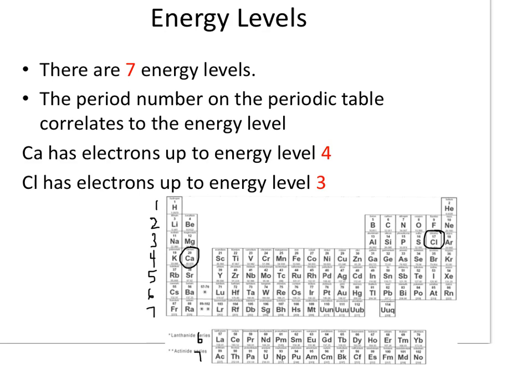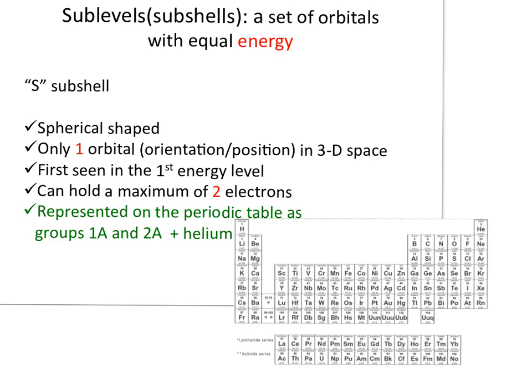The first subshell is the S sub-level. It contains only one orbital and can hold a maximum of two electrons. Using the periodic table, we box in the Group 1A and 2A elements — those correlate to the S sub-shell. Helium is also part of that S sub-shell, so draw an arrow next to hydrogen to remind you of that.